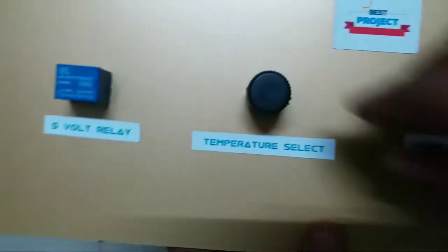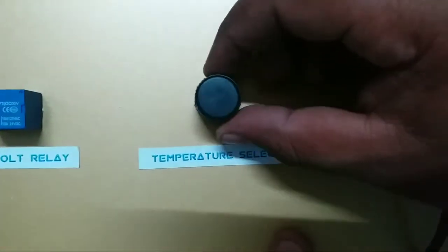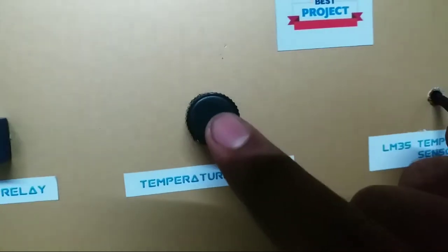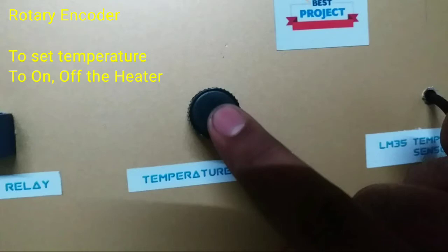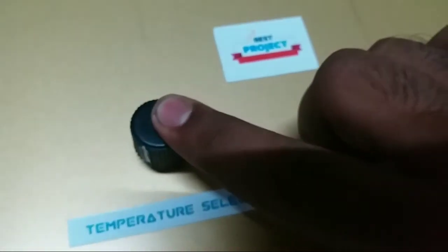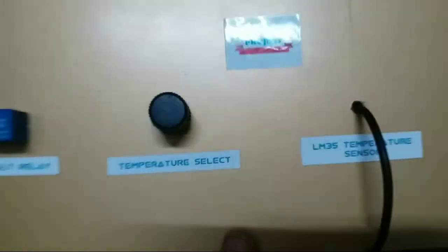This black circular knob is a rotary encoder used to set the desired level of water temperature. It can be rotated to set the temperature value in degree centigrade. After setting the temperature value, push the knob one time to start the heating operation.